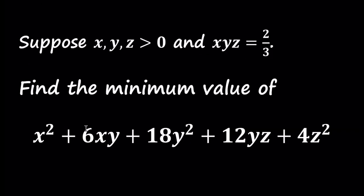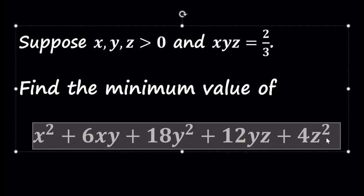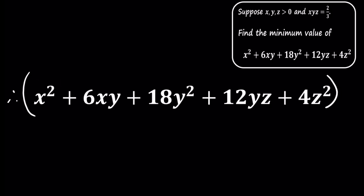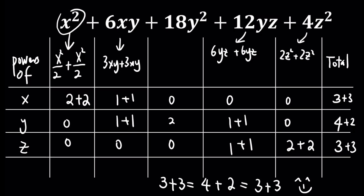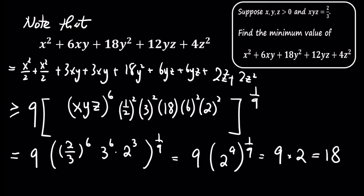So, the minimum value of x² + 6xy + 18y² + 12yz + 4z² is 18. Thanks for following along with this solution. I hope this breakdown was helpful. If you enjoyed this video, please consider liking and subscribing for more math problems like this. See you in the next one.